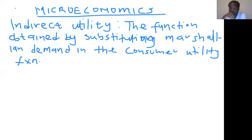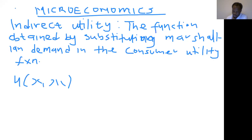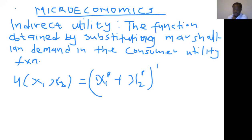You may recall from the first discussion that we were given a utility function which was specified as U(x1, x2) = (x1^φ + x2^φ)^(1/φ). So this is the utility function that was given to us.